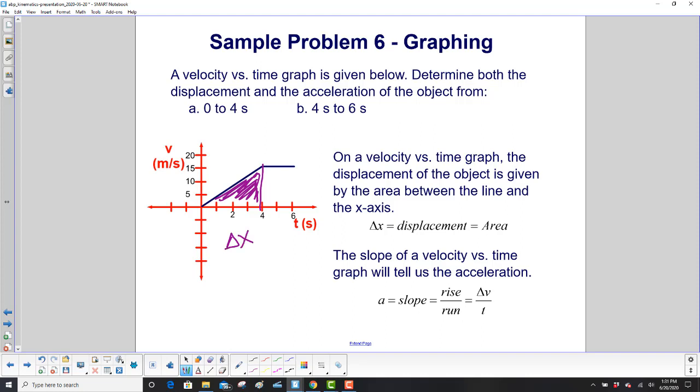The slope of a velocity versus time graph will tell us the acceleration. So acceleration is the slope, which is rise over run. And what's the rise? It's delta v velocity over time. What's delta v over time? That's acceleration.